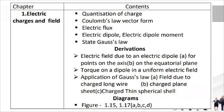Chapter 1: Electric Charges and Fields. The most important topics are quantization of charge, Coulomb's law vector form, electric flux, electric dipole, electric dipole moment, and Gauss's law. Important derivations: electric field due to electric dipole for a point on the axis and on the equatorial plane, torque on a dipole in a uniform electric field, and application of Gauss's law — field due to a charged long wire, charged plane sheet, and thin spherical shell. Important diagrams: 1.15, 1.17 BCD.